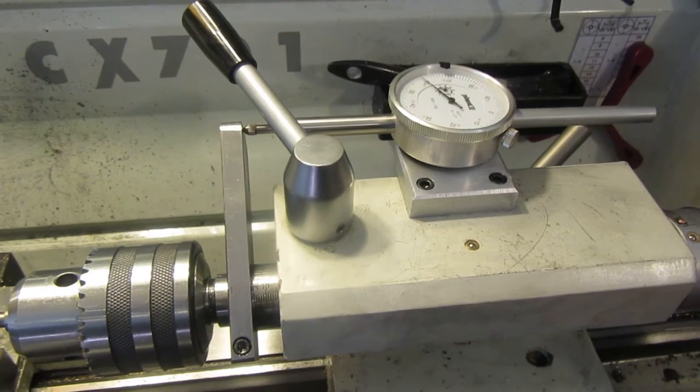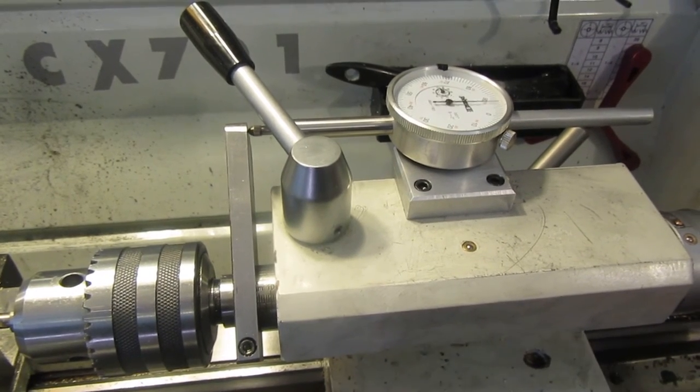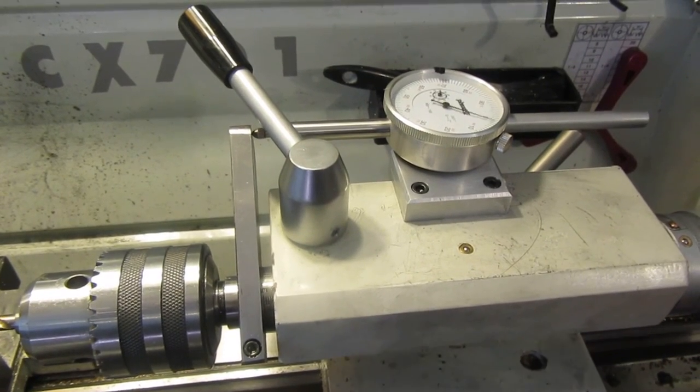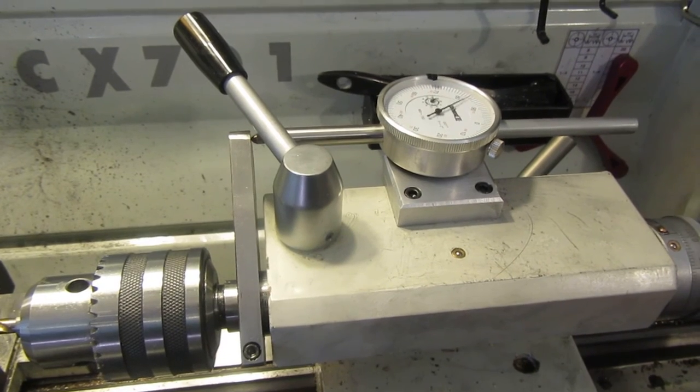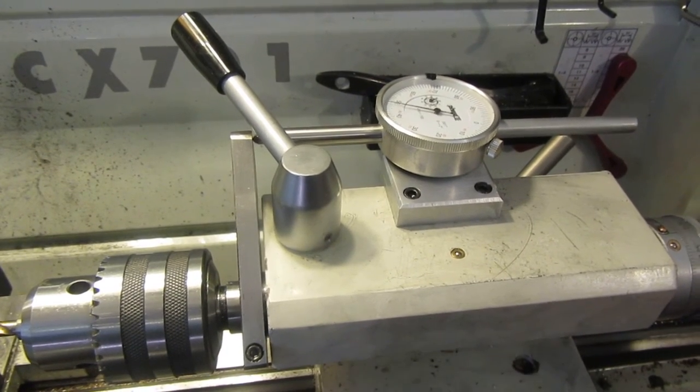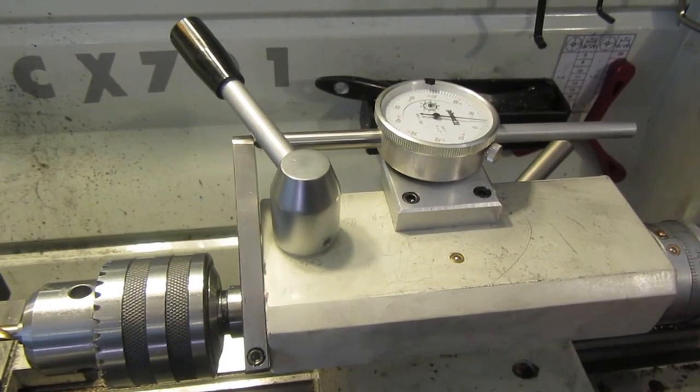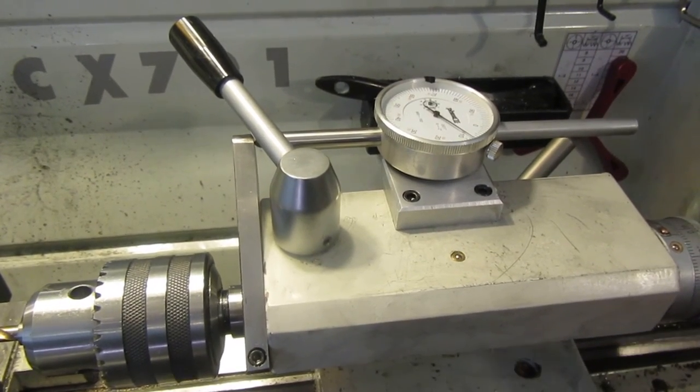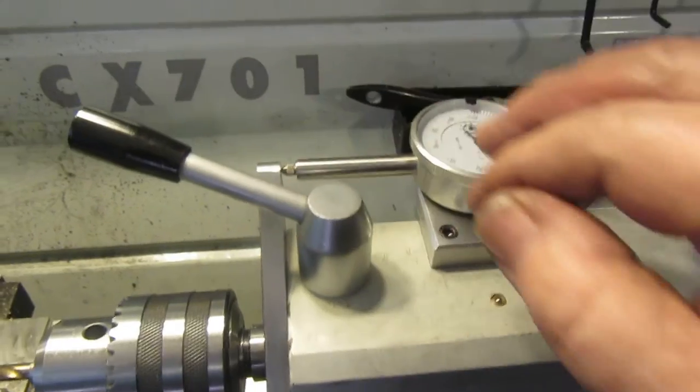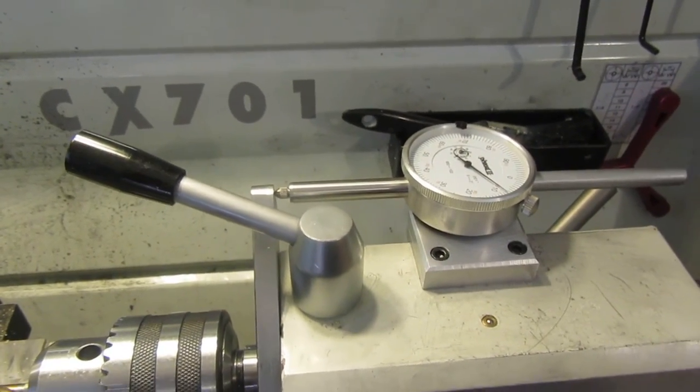The nice thing about mounting them this way is you can't push the stem on the dial indicator too far in and damage it. Because when I'm wound all the way back with my tailstock, I still have travel on the tip.